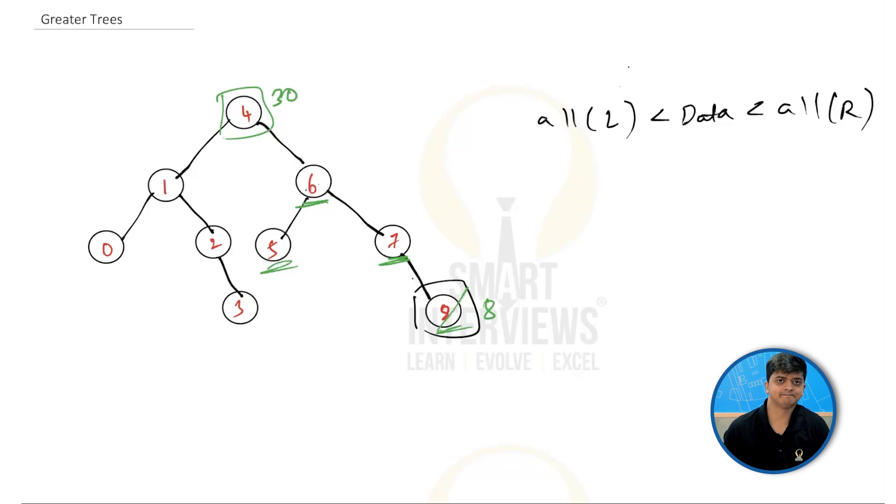Now, how do we solve this? To solve this problem, we are going to use the property of a binary search tree, which is in-order of a binary search tree is going to be sorted. Now, if I write the in-order for this binary search tree, what will I get? I'll get 0, 1, 2, 3, 4, 5, 6, 7 and 8. If you look at this, the in-order for the binary search tree is sorted.